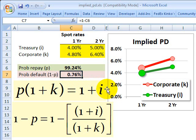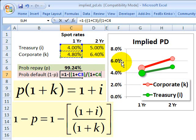If I wanted my probability of default, I could do this full equation right here, which is 1 minus the quantity 1 plus my treasury spot rate divided by 1 plus my corporate spot rate, and I get 0.76% is the implied probability of default.